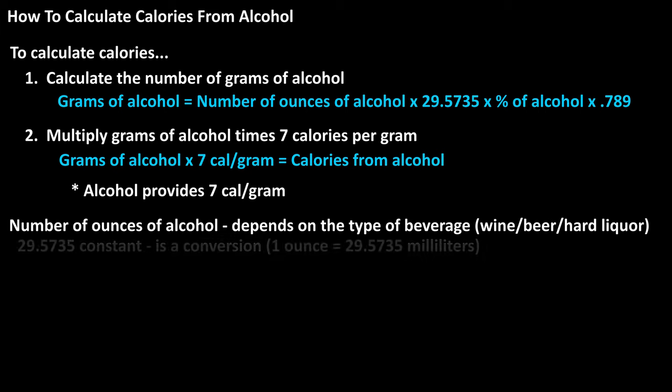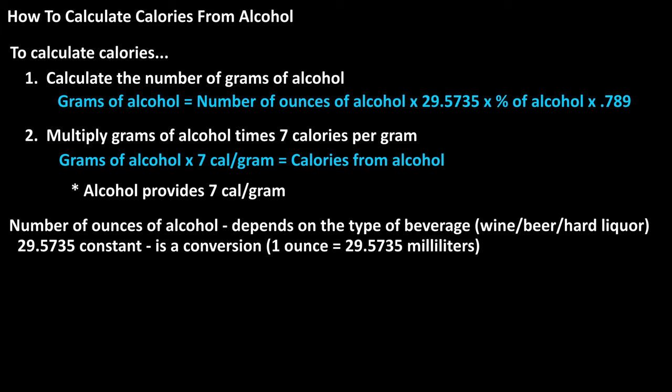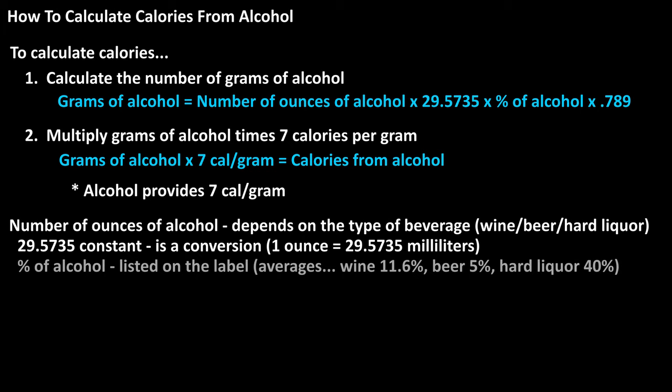Back to the formula. The constant 29.5735 is a conversion factor, as one ounce equals 29.5735 milliliters. The percentage of alcohol is listed on the label. The average for wine is about 11.6%, the average for beer is 5%, and about 40% for hard liquor, though it can range greatly for hard liquors.